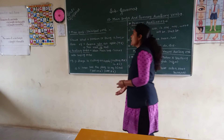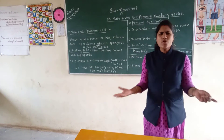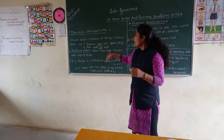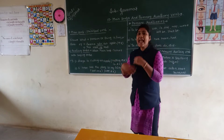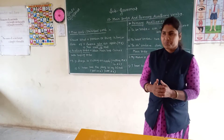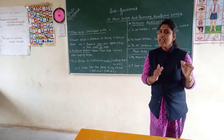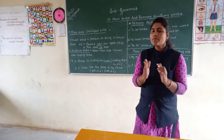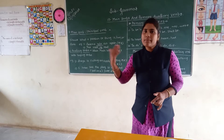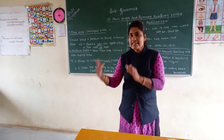Now, auxiliary verbs. Sometimes main verbs come alone, but sometimes when the main verb comes with helping verbs, it is called the auxiliary verb. For example, 'She is dancing.' If 'is' came alone, it would be the main verb, but here 'is' comes with 'dancing.' So 'dancing' alone is the main work.